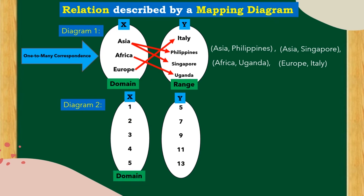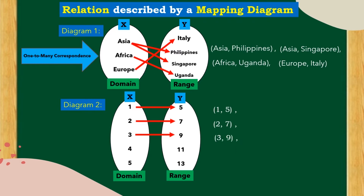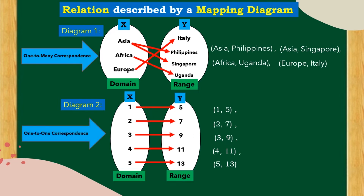Diagram 2 has x-coordinates as the domain and y-coordinates as the range. Make an arrow to form the pairs: (1, 5), (2, 7), (3, 9), (4, 11), and (5, 13). This type of relation is a one-to-one correspondence, meaning one domain maps to one range value.